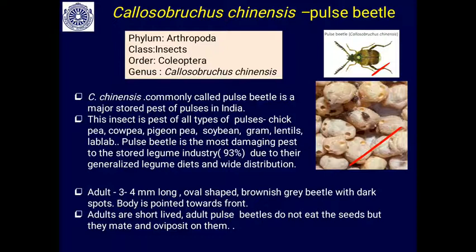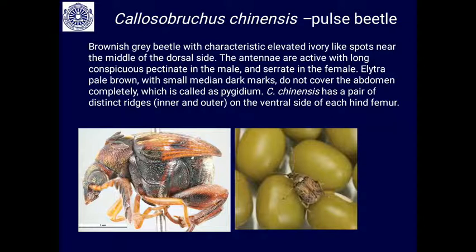The adult is about three to four millimeters long and oval shaped. It is a brownish gray beetle with dark spots on the body, and the body is pointed towards the front. Adults are short-lived, about one to two weeks, and adults do not feed on the seeds. Only the larvae cause all the damage — the female oviposits on the grain.